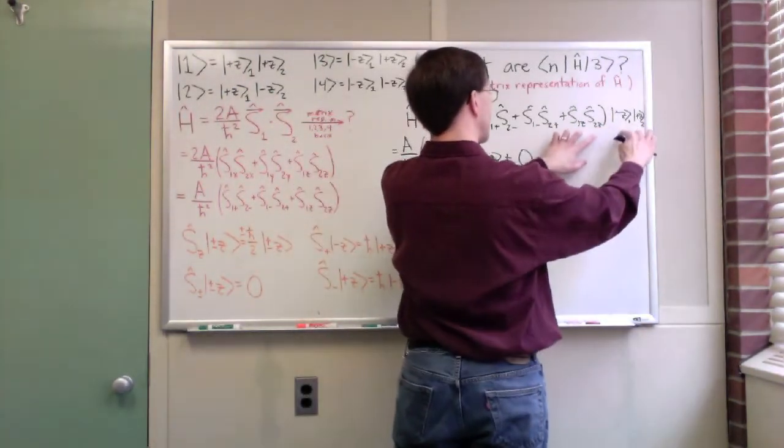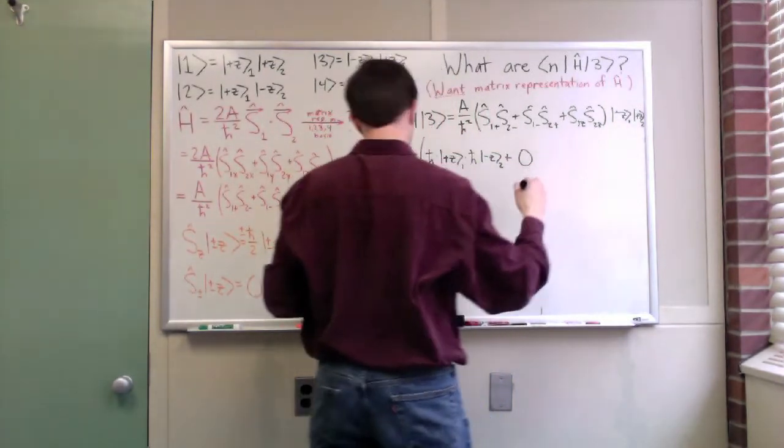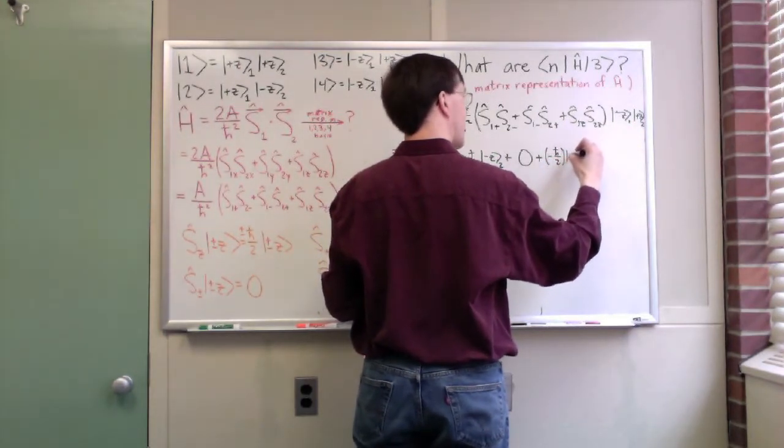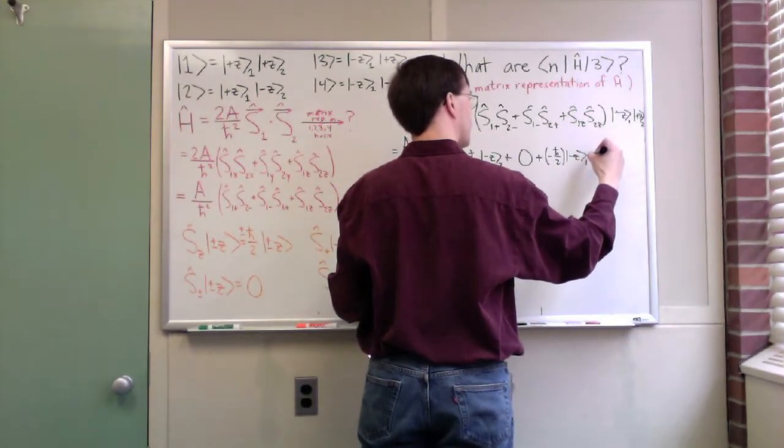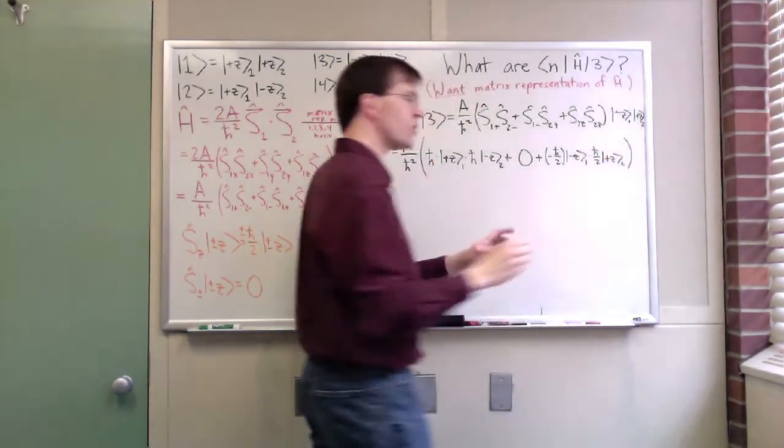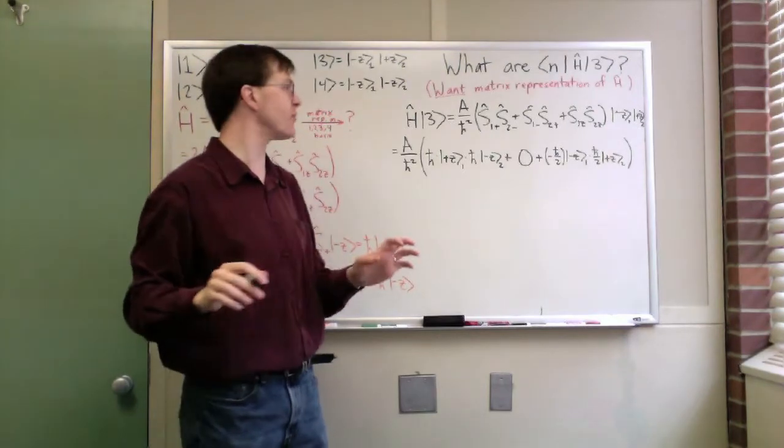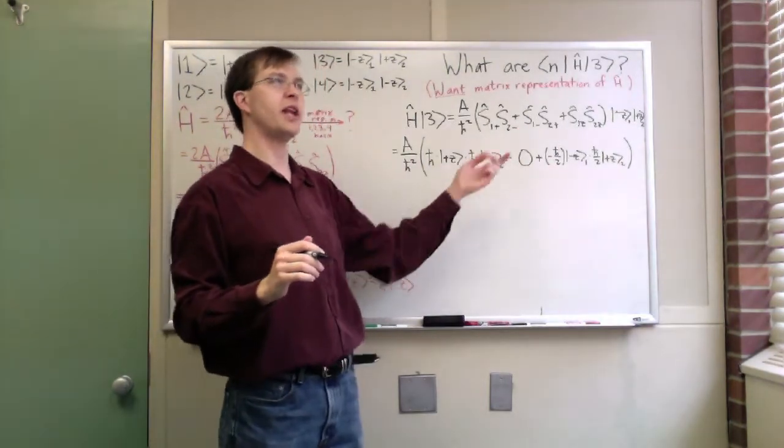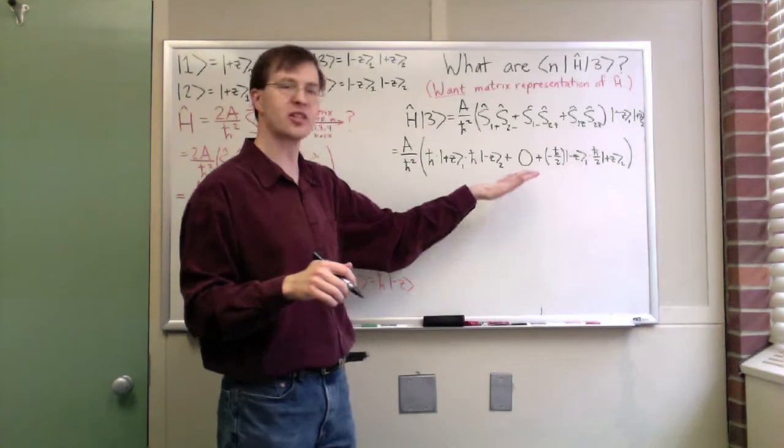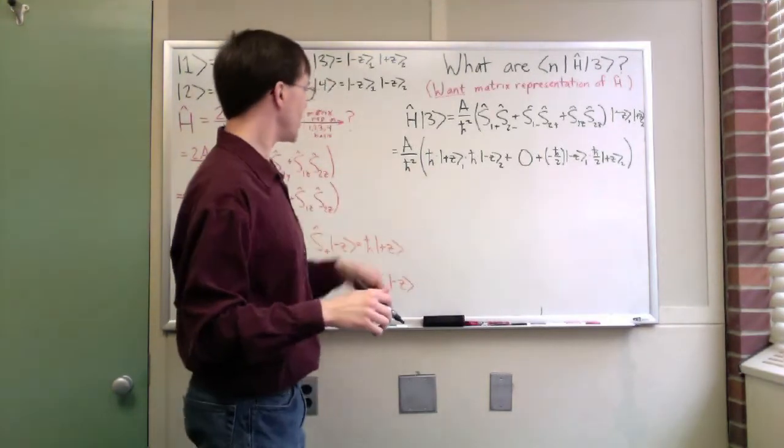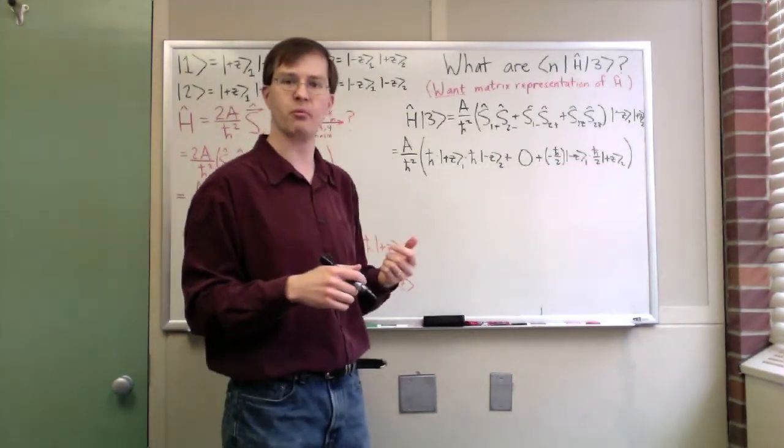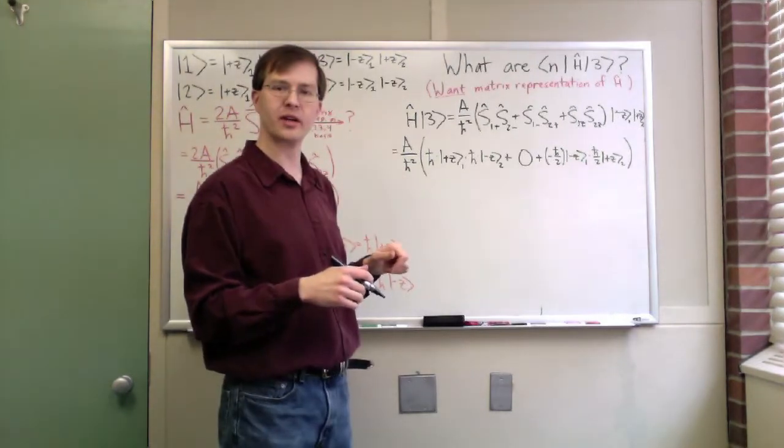And finally, these are just eigenstates, S1z and S2z acting on their eigenstates. S1z acting on this gives me minus h-bar over 2 times minus z for particle 1 times plus h-bar over 2 times plus z for particle 2. This is our usual thing that we want to do with operators. Almost every time, operators are a pain in the neck to work with. We want to get rid of those. We want to get rid of the operators and act in ways that we know how it works and we know how it changes our basis.